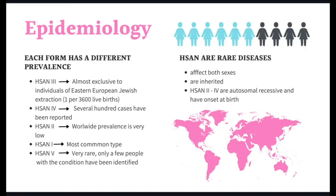For the epidemiology, each form has a different prevalence. HSAN 3 is almost exclusive to individuals of Eastern European Jewish extraction. Several hundred cases of HSAN 4 have been reported. HSAN 2 has a very low worldwide prevalence. HSAN 1 is the most common type. HSAN 5 is very rare and only a few people with this condition have been identified. HSAN are rare diseases that affect both sexes and are inherited. HSAN 2 through 4 are autosomal recessive and have onset at birth.